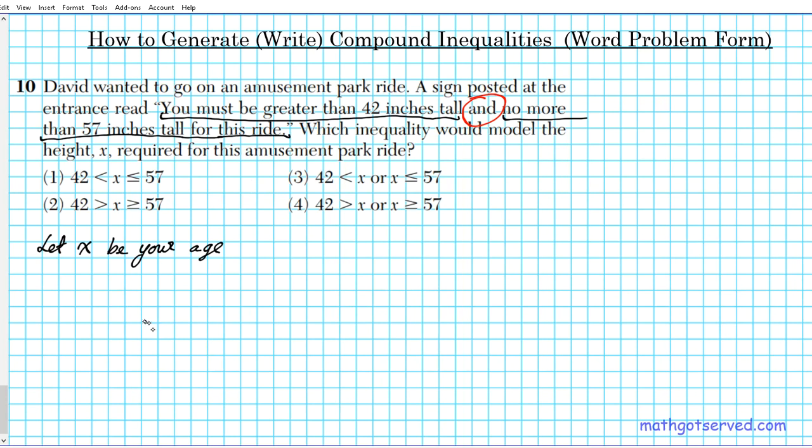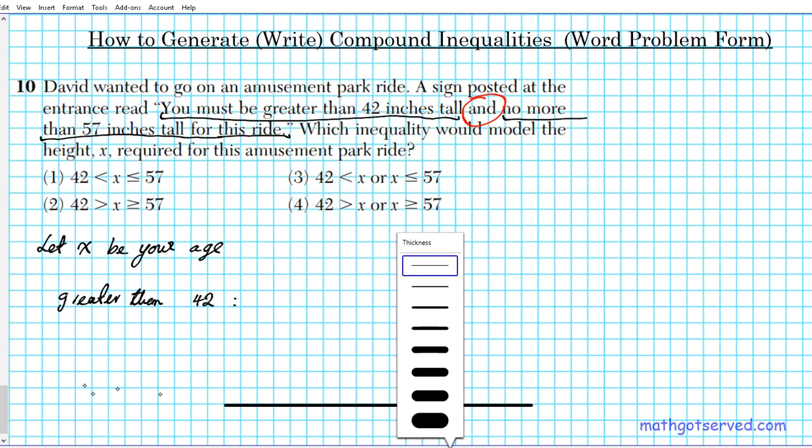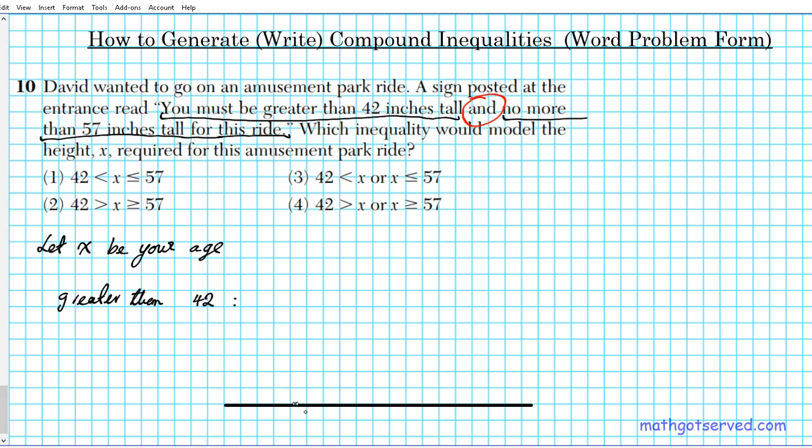Firstly, you have to be greater than 42 inches. Let's represent that on a number line. We're going to generate two number lines, the two graphs and then condense them into one, which is going to be the final result. So let's say we have a number line like this. And this is 42 right here. And let's call this 57. A number line when you go in the right direction is getting greater. And then if you go to the left, you're getting less.